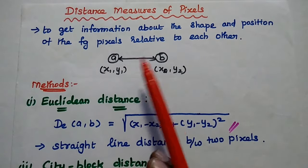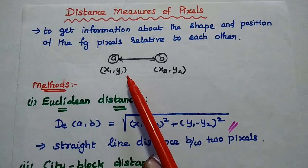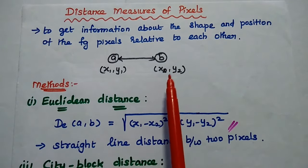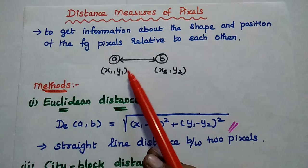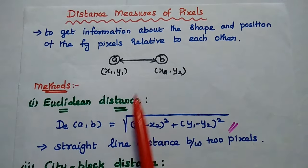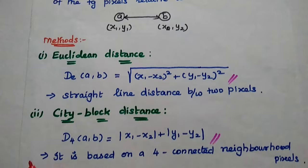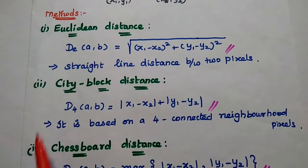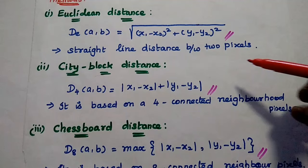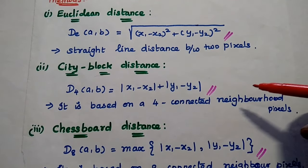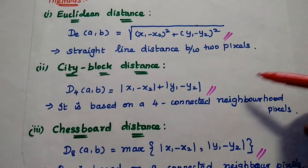We can consider two pixels A and B. The coordinates of A are (x1, y1) and the coordinates of B are (x2, y2). We can easily measure the distance between these two pixels using three methods: one is the Euclidean distance method, the next is city block distance, and the third is the chessboard distance method. These three methods are widely used in image processing to measure the distance between two pixel values.